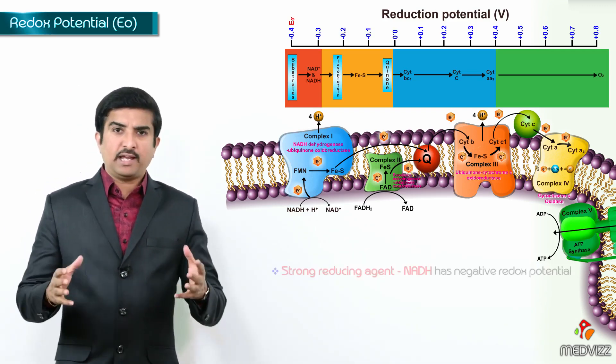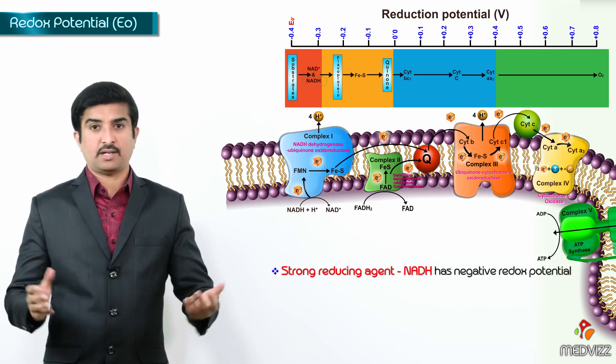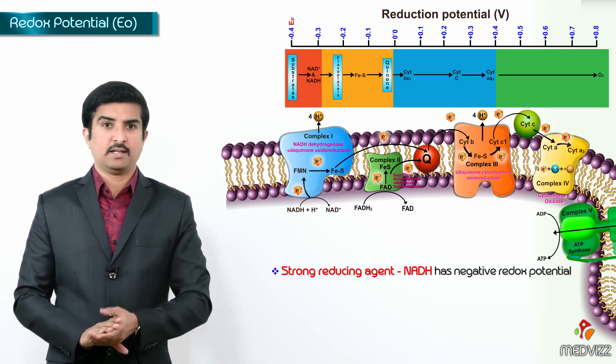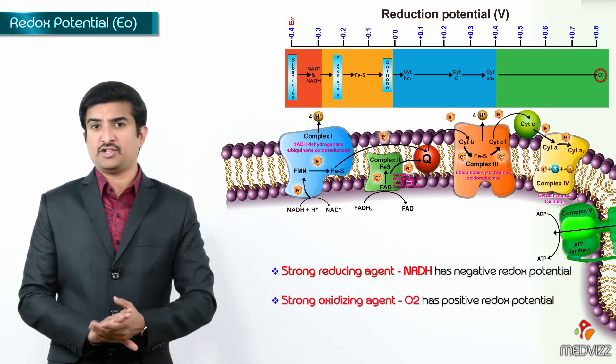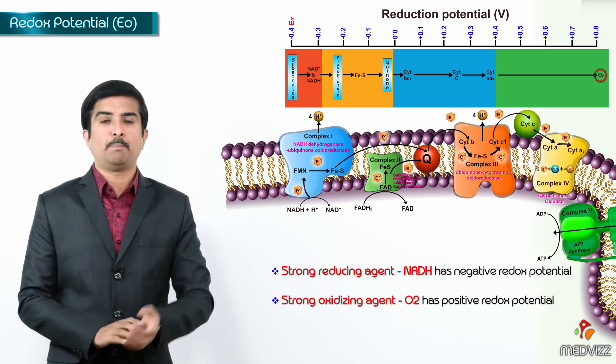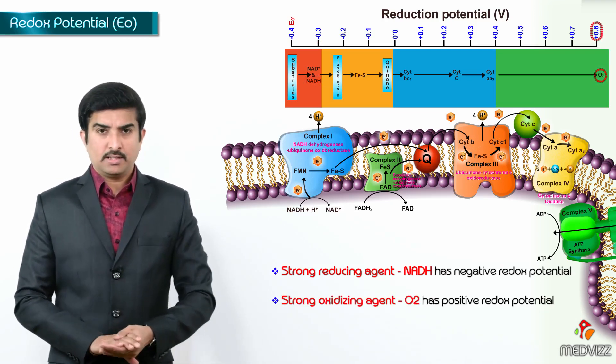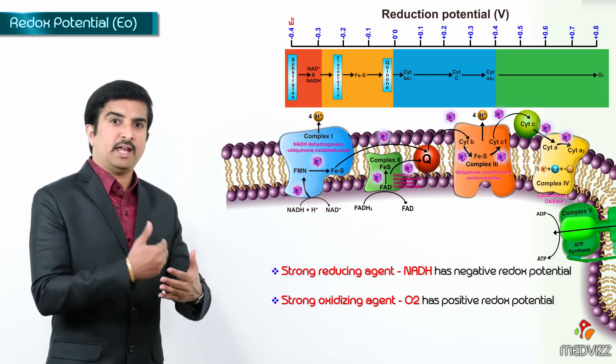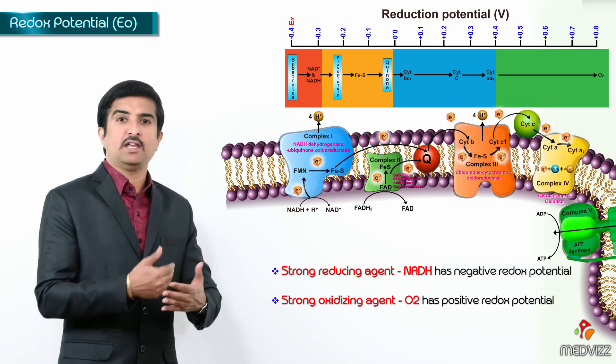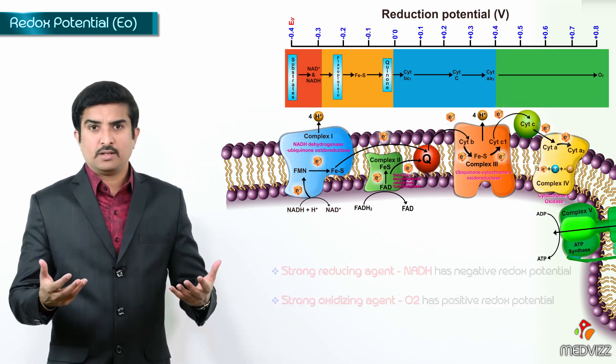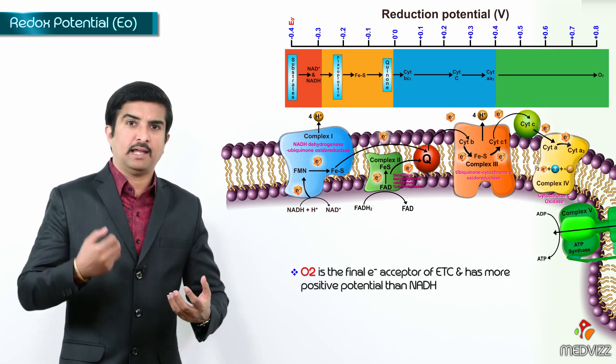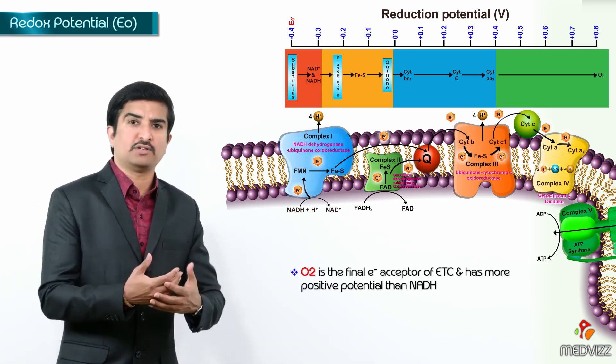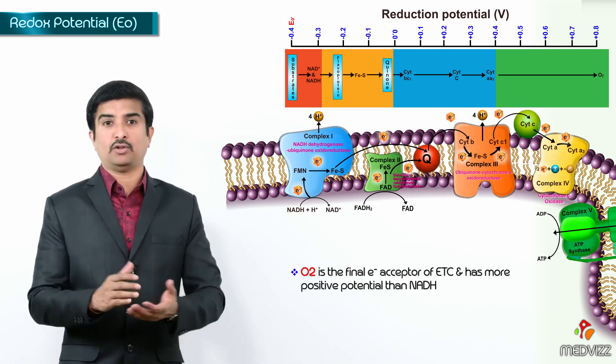So, if you take a strong reducing agent such as NADH which has a negative redox potential whereas a strong oxidizing agent such as oxygen has a positive redox potential. That is the reason in the electron transport chain electrons are transferred from NADH to coenzyme Q to cytochrome C finally to reach oxygen. So, oxygen is considered to be the final electron acceptor of the electron transport chain and it has more positive potential when compared to that of the NADH.